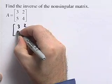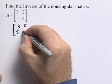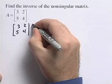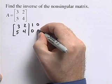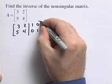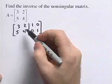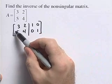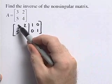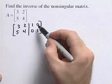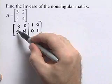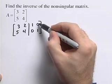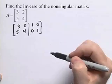We're going to rewrite our matrix A, then augment that with a 2 by 2 identity. We're going to perform row operations on this matrix so that we can get the identity matrix instead of A over here. We're going to do the operations on the entire row, and we'll end up with our inverse matrix on this side.